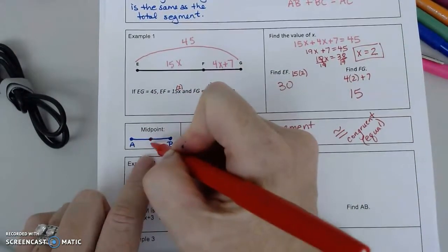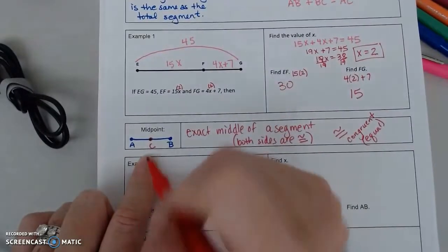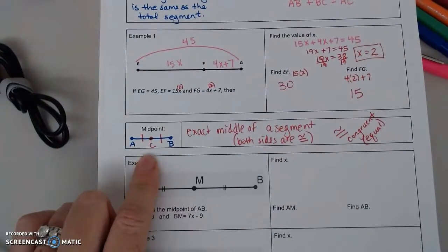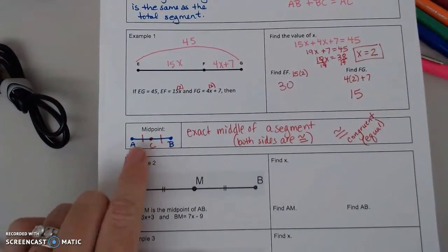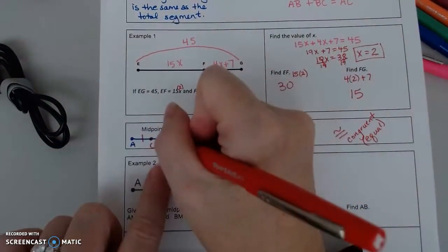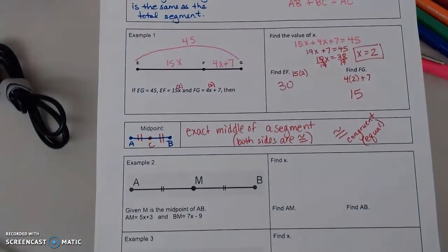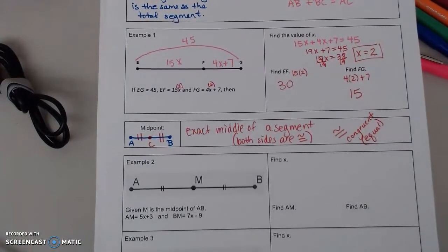So I'm going to put C. And the symbol on a drawing for congruent is the same amount of slashes. So if I have one slash on the right, I need to have one slash on the left. If I have two slashes on the right, I need to have two slashes on the left. And they usually go in order. 1, 2, 3, and so forth.